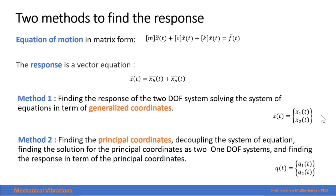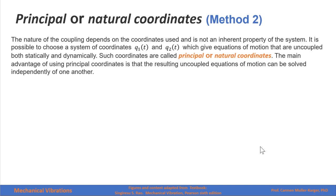The second method, which we will introduce today, is finding the principal coordinates by decoupling the system of equations, finding the solution in terms of principal coordinates as one degree of freedom systems, and finding the response in terms of the principal coordinates. The nature of the coupling depends on the coordinates used and is not an inherent property of the system. It is possible to choose a system of coordinates q1 and q2 whose equations of motion are uncoupled both statically and dynamically — meaning that all matrices will be diagonal.